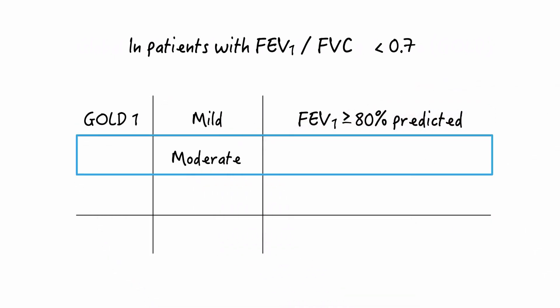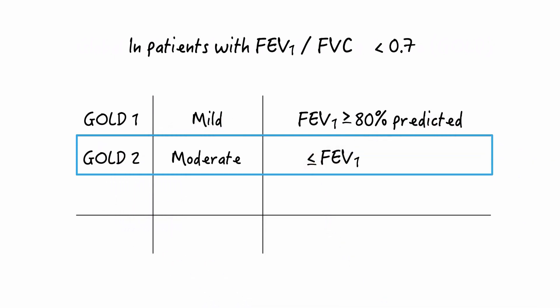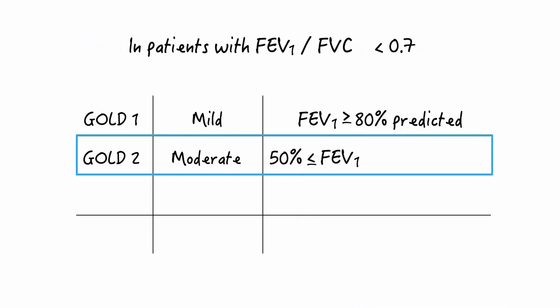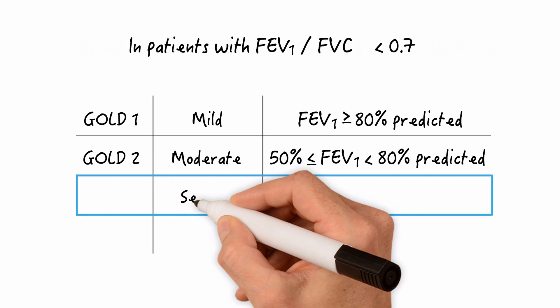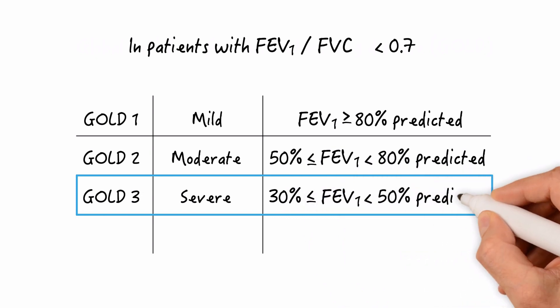Moderate obstructive disease, or GOLD two, is an FEV1 greater than or equal to 50%, but less than 80% predicted. Severe obstruction, or GOLD three, is an FEV1 greater than or equal to 30%, but less than 50% predicted.